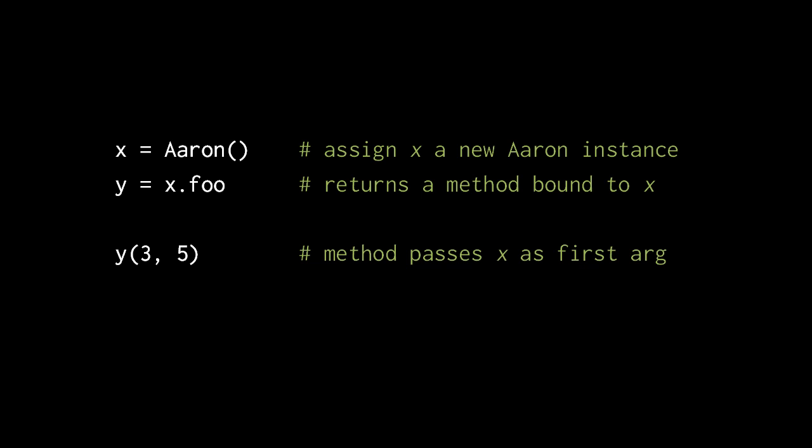When we create a class in Python, the convention is that any of the functions we give it for methods, the first parameter by convention expects to receive the instance.